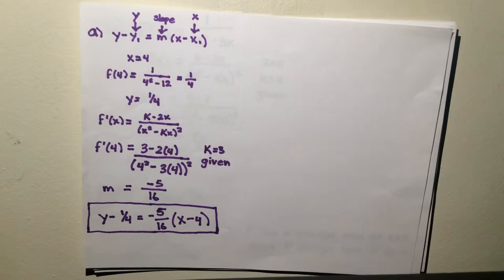Consider the function f(x) equals 1 over x squared minus kx, where k is a non-zero constant. The derivative of f is given by f prime of x equals k minus 2x over x squared minus kx.